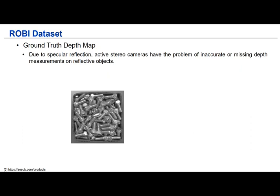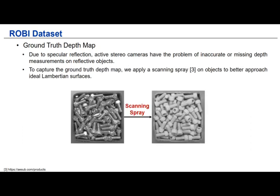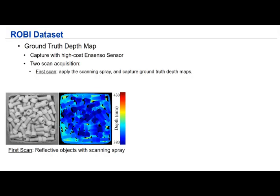Compared with other datasets, the biggest novelty of the Robi dataset is the ground truth depth maps for reflective objects. We know that because of specular reflection, active stereo cameras generally have problems with inaccurate and missing depth data. However, these problems can be easily solved when the object surface has ideal diffuse reflection. Therefore, in our work, we apply a scanning spray on the objects for capturing the ground truth depth maps.